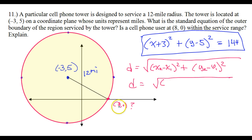Okay, so x minus x, so that's 8 minus negative 3. It could have been 8 plus 3. And then y minus y, so that's 0 minus 5 squared. This will give us the distance between.